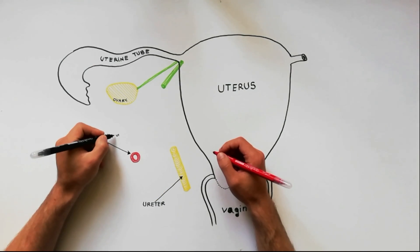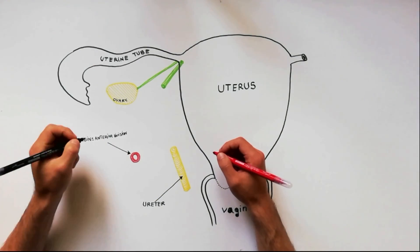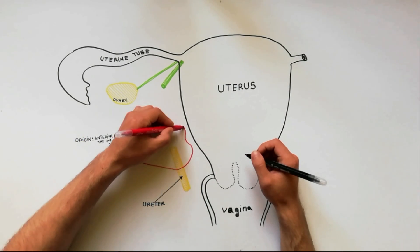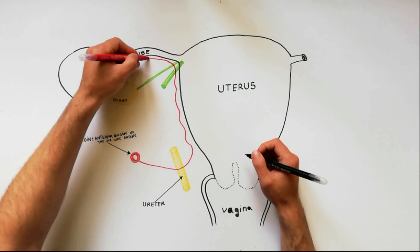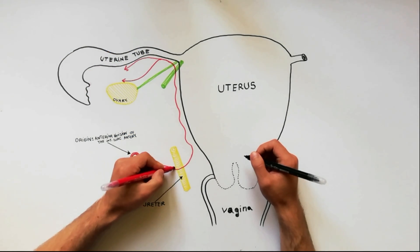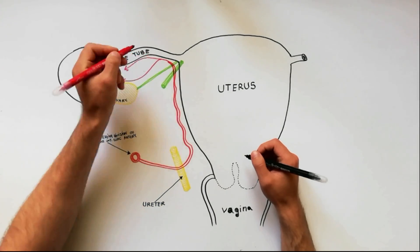The uterine artery is a branch of the anterior division of internal iliac artery. It runs medially across the pelvic floor in the base of the broad ligament towards the uterine cervix. Close to the cervix it crosses the ureter anteriorly.